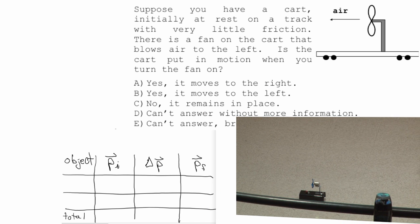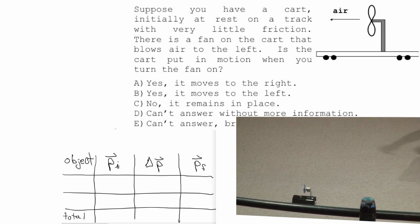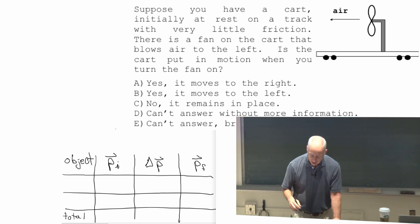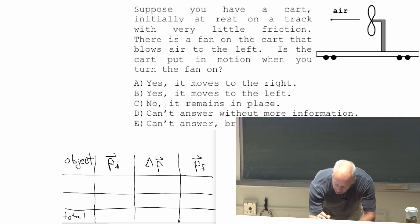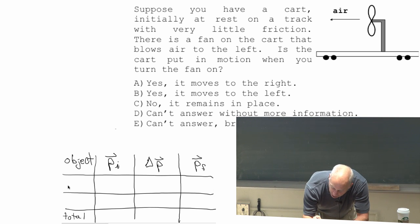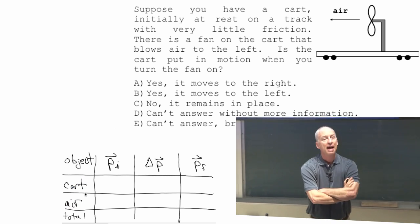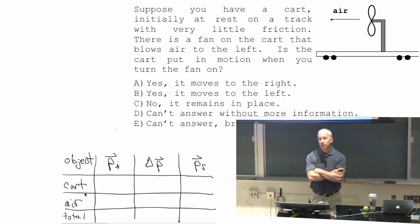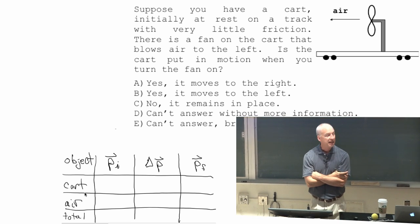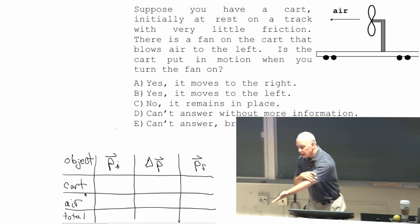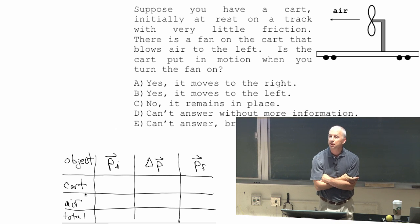There's a little bit of friction, but let's ignore it. It's not very big. The cart can roll fairly easily. And so I want to pick two objects. I would say two objects are interacting: the cart is interacting with the air. The cart includes the fan, the motor, and all of those other pieces.